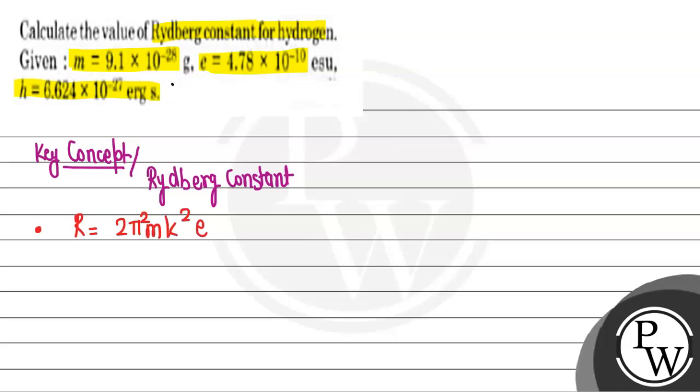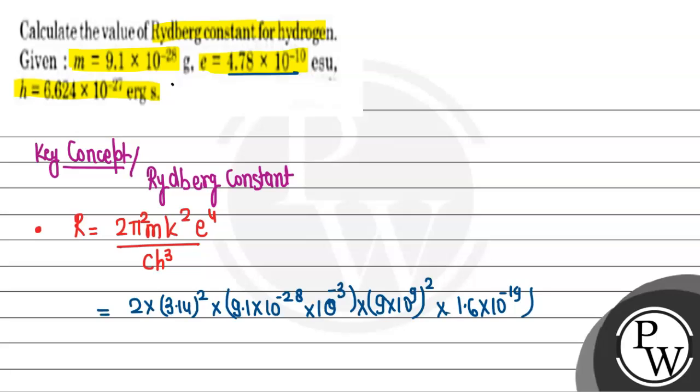The formula is R = 2π²mk²e⁴/(ch³). This is the Rydberg constant. Calculating: 2 × (3.14)² × mass (9.1 × 10^(-28) g, converting to 10^(-31)) × k value of 9 × 10^9, then e², with value (4.78 × 10^(-10))² to the power of 4, divided by c = 3 × 10^8...